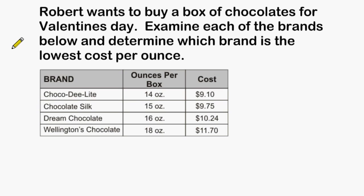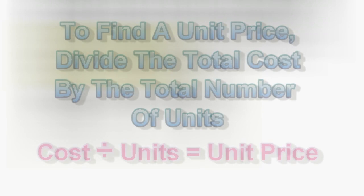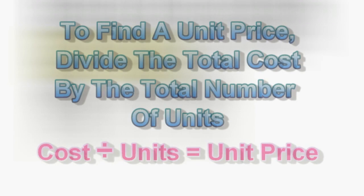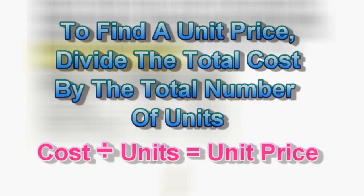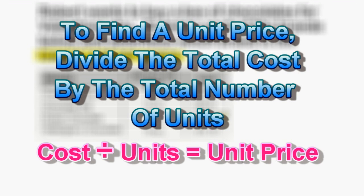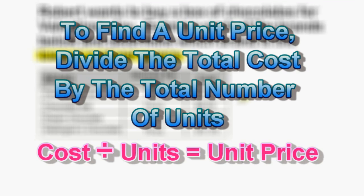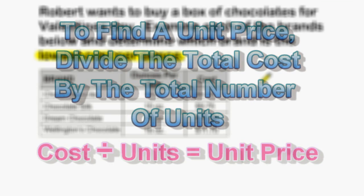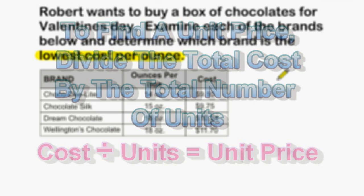Robert wants to buy a box of chocolates for Valentine's Day. We need to examine each of the brands in the table and determine which brand is the lowest cost per ounce. To do this, we take the cost of each brand and divide by how many ounces are in each box to get a unit price per ounce.